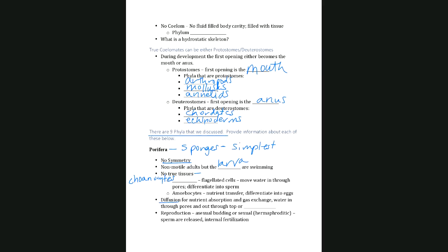Sponges use diffusion to get nutrients and for gas exchange. Water flows in through pores because choanocytes move their flagella, and flows out through the top through a special opening called the osculum. Reproduction can be asexual by budding, or sexual — sperm are released and fertilization occurs internally when sperm fertilizes the egg.